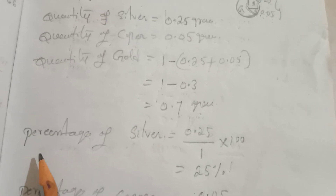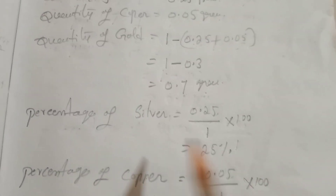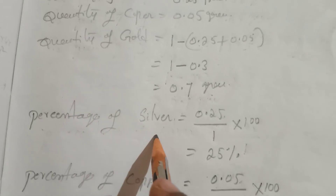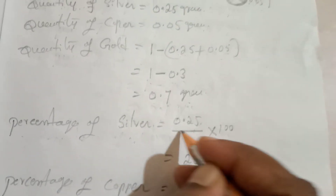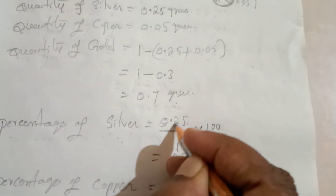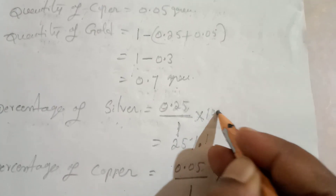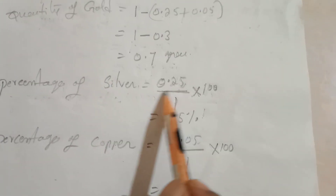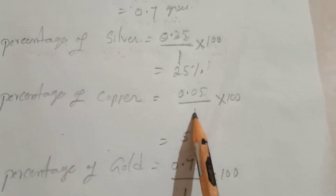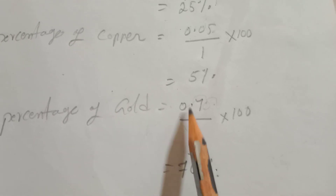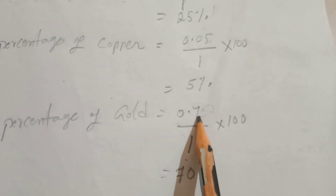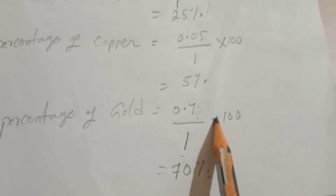The quantity of gold is 0.7. Percentage of silver: 0.25 by 1 into 100 is 25%. Percentage of copper: 0.05 by 1 into 100 is 5%. Percentage of gold: 0.7 by 1 into 100 is 70%.